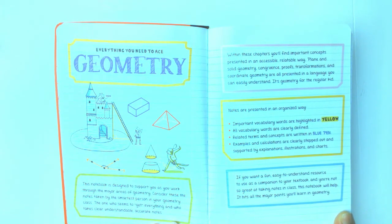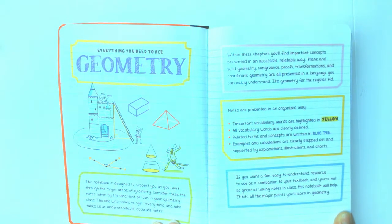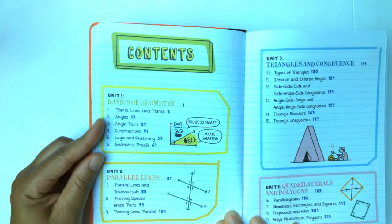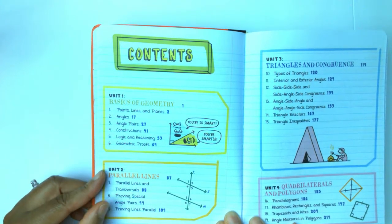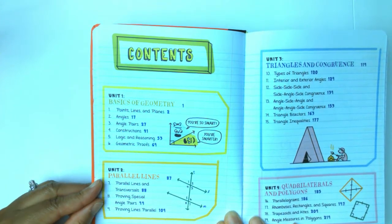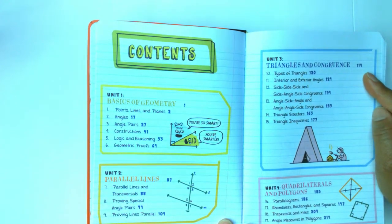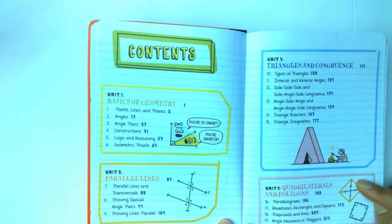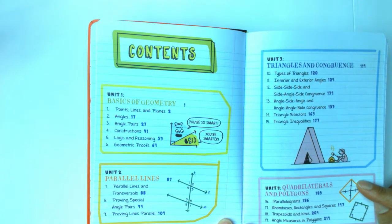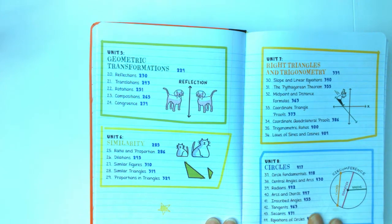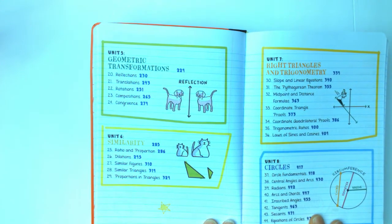Examples and calculations are clearly stepped out and supported by explanations, illustrations, and charts. The table of contents includes Unit 1: Basics of Geometry, Unit 2: Parallel Lines, Unit 3: Triangles and Congruence, and Unit 4: Quadrilaterals and Polygons.